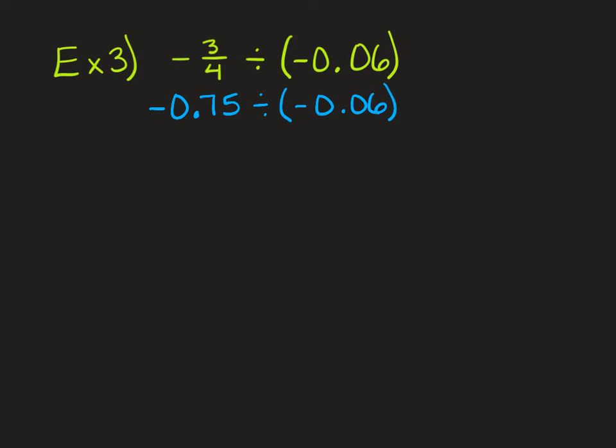And so now I have a decimal divided by a decimal. So I'm going to think of my signs. A negative divided by a negative. They're the same sign, so I get a positive answer. And I could just go to my calculator here and say 0.75 divided by 0.06. And I get 12.5. We already said it's positive. So we're finished with it.